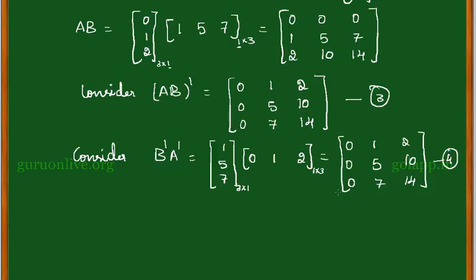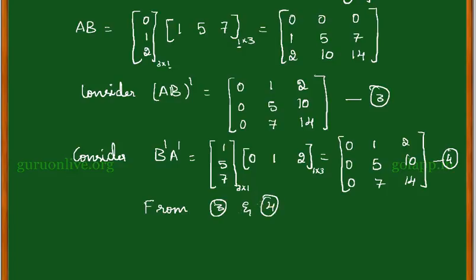Compare equations 3 and 4. The elements of equation 3 are equal to the elements of equation 4. Therefore, from equations 3 and 4, the LHS equals the RHS: AB whole transpose is equal to B transpose into A transpose. Hence verified.